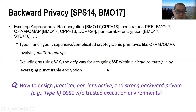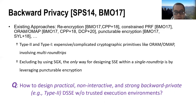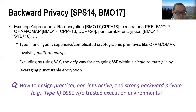Until now, different approaches have been proposed to achieve backward privacy, such as re-encryption, constrained PRF, oblivious RAM, and puncturable encryption. Among them, the Type 1 and Type 2 schemes already rely on intensive or complicated cryptographic primitives, like oblivious map, which already involve multi-round trips. To our best knowledge, excluding the use of SGX, the only way to design dynamic SSE within a single round trip is by leveraging puncturable encryption.